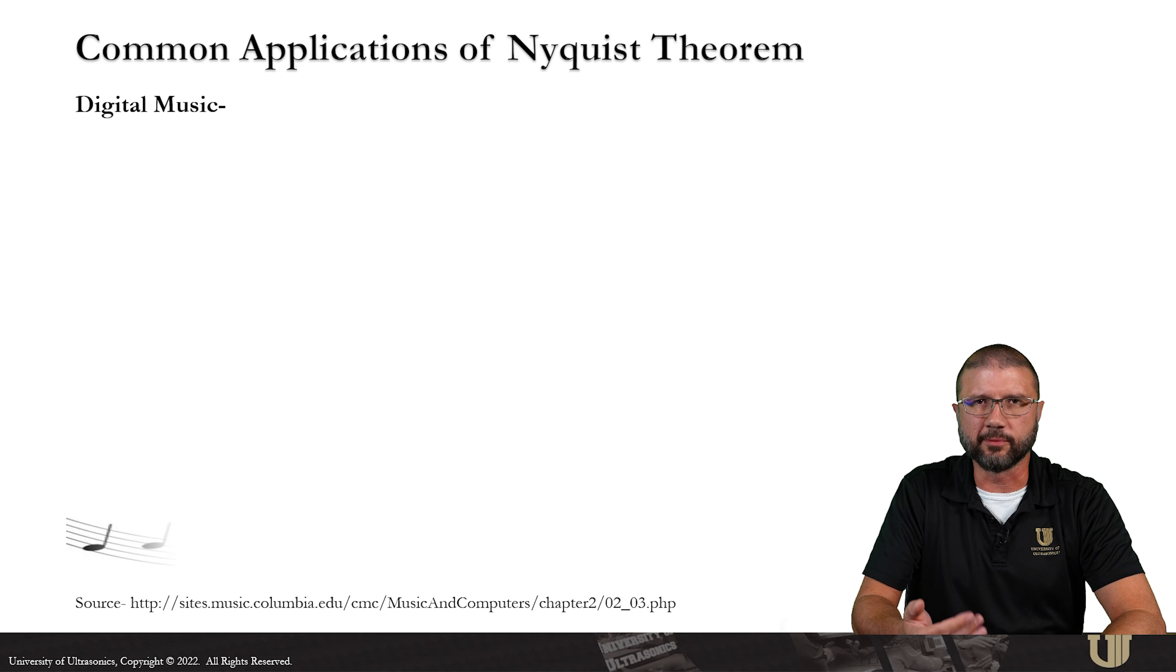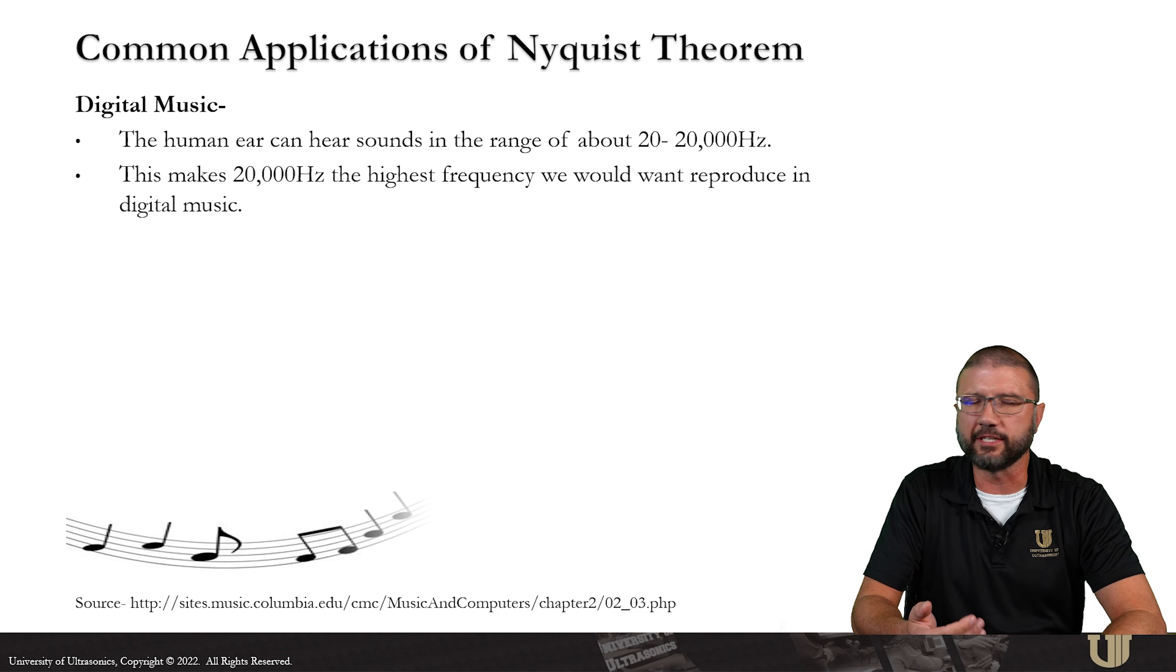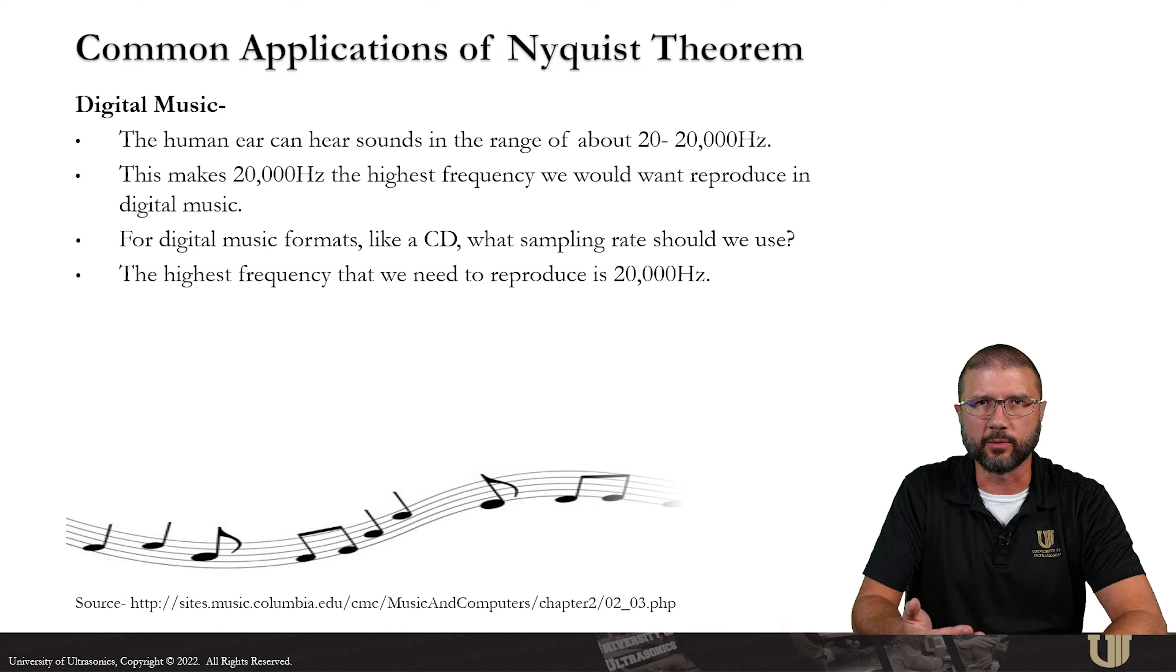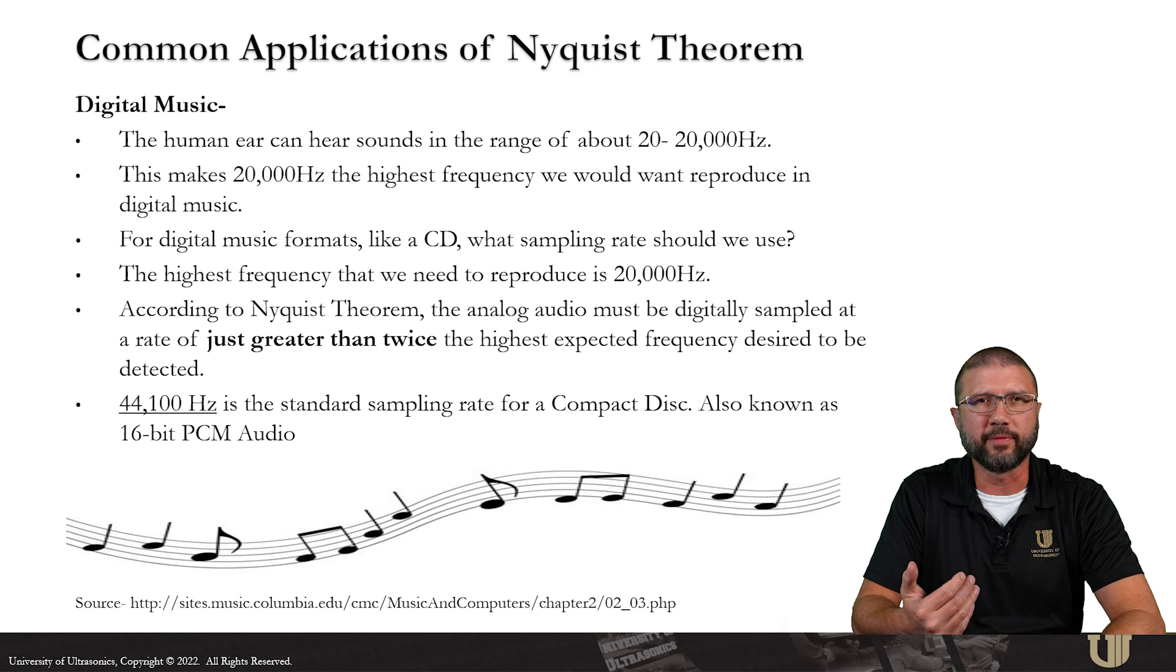We can also draw some similar parallels in the world of digital music. The human ear can hear sounds in the range of about 20 to 20,000 Hertz, making 20,000 Hertz the highest frequency that we would want to reproduce in digital music. According to Nyquist theorem, the analog audio must be sampled at a rate of just greater than twice the highest frequency that was desired to be reproduced. 44,100 Hertz is the standard sampling rate for a CD or for digital music. Also known as 16-bit PCM audio and it's just greater than twice that 20,000 Hertz threshold.